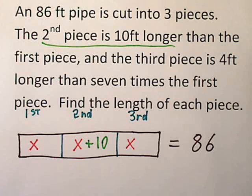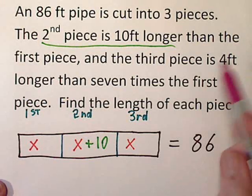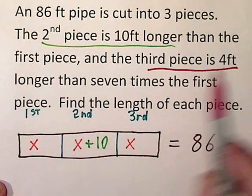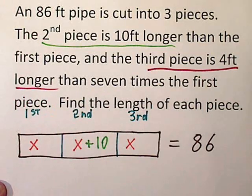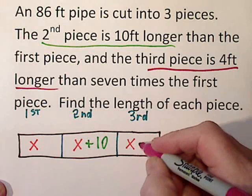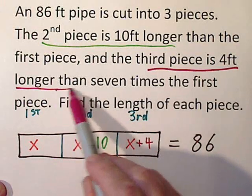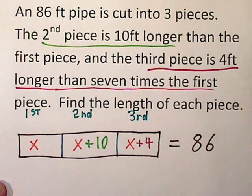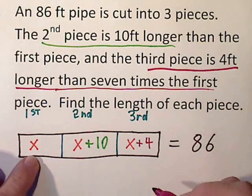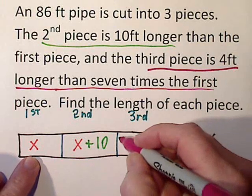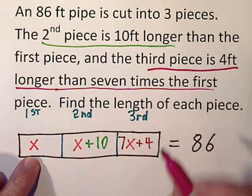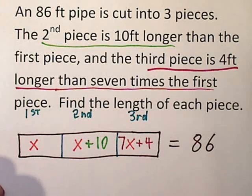Then we'll turn our attention to the third piece. The one is x plus 10 foot longer than 7 times the first. Well, if the first one is described as x, 7 times the first would be 7x.